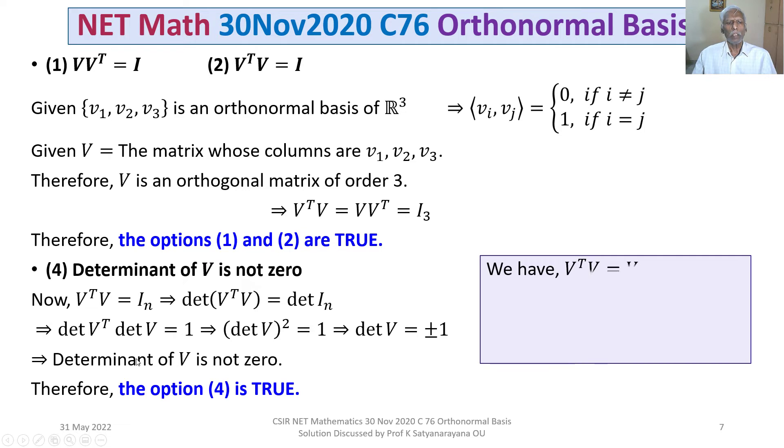That is, we have VᵀV = VVᵀ = Iₙ and that means V is invertible and V⁻¹ is Vᵀ. So, V⁻¹ exists means V is non-singular, that means the determinant of V is not zero.